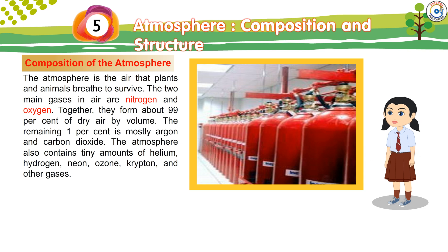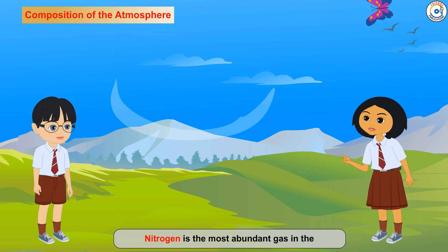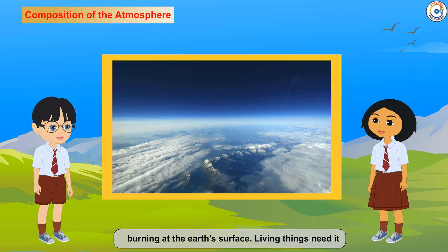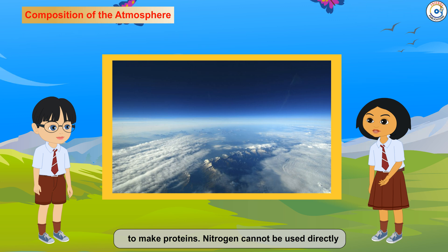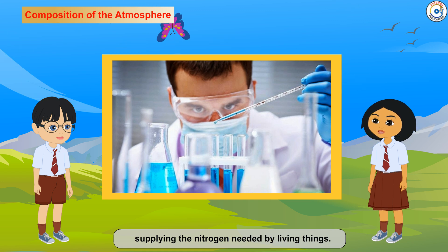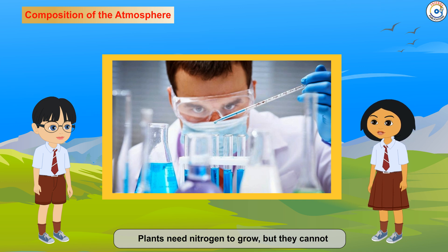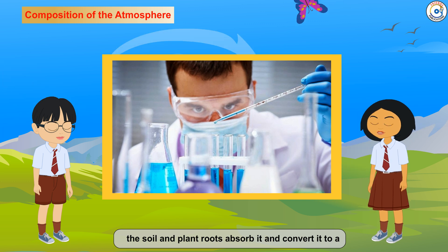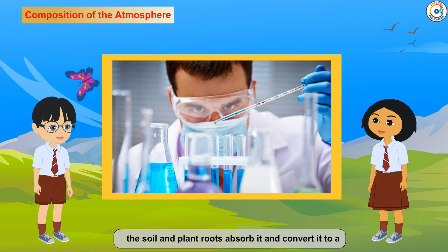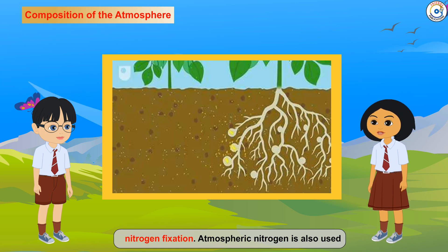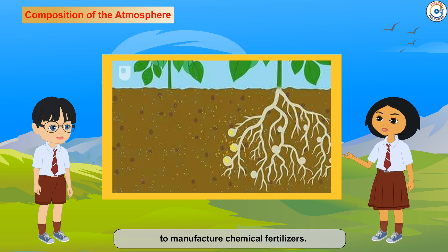The atmosphere also contains tiny amounts of helium, hydrogen, neon, ozone, krypton, and other gases. Nitrogen is the most abundant gas in the atmosphere. It dilutes oxygen and prevents rapid burning at the Earth's surface. Living things need it to make proteins. Nitrogen cannot be used directly from the air — the nitrogen cycle is nature's way of supplying the nitrogen needed by living things. Plants need nitrogen to grow but cannot absorb it directly from the air. Microorganisms in the soil and plant roots absorb it and convert it to a form which plants can then use. This is called nitrogen fixation. Atmospheric nitrogen is also used to manufacture chemical fertilizers.